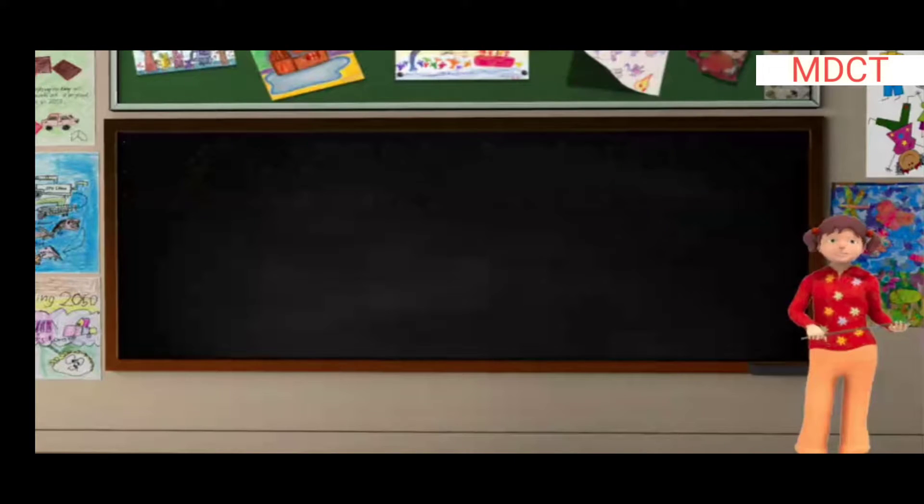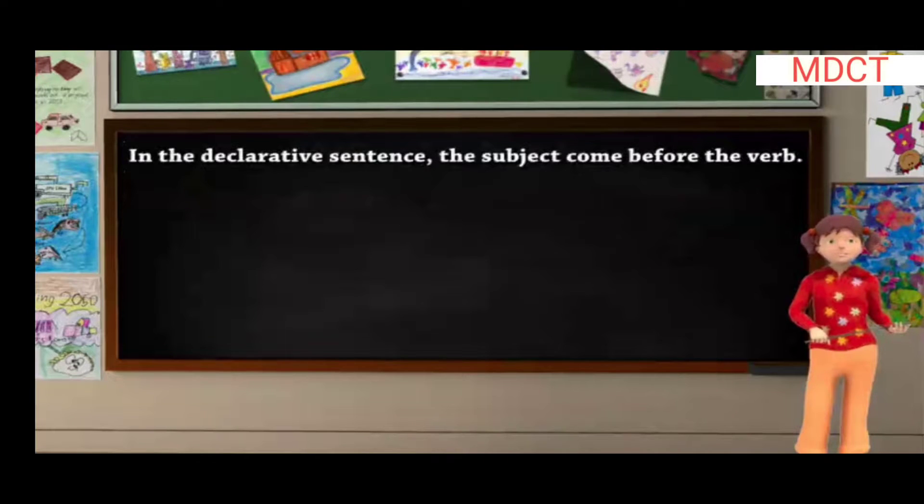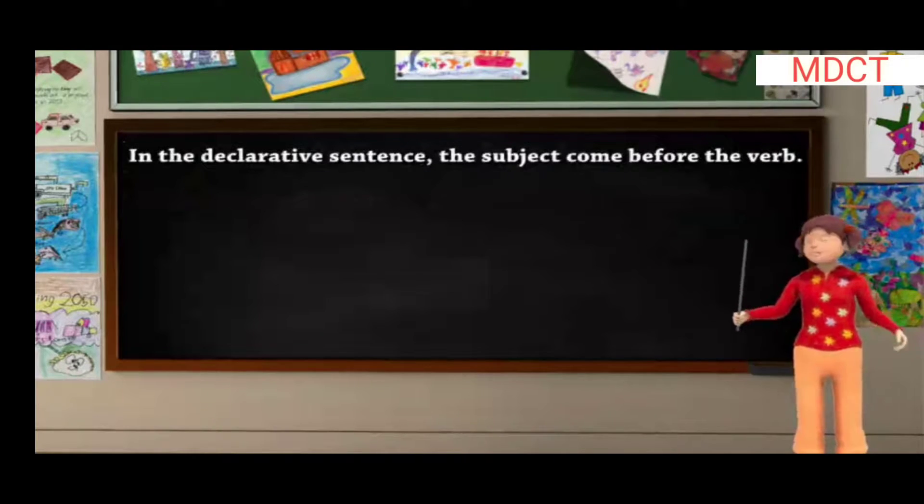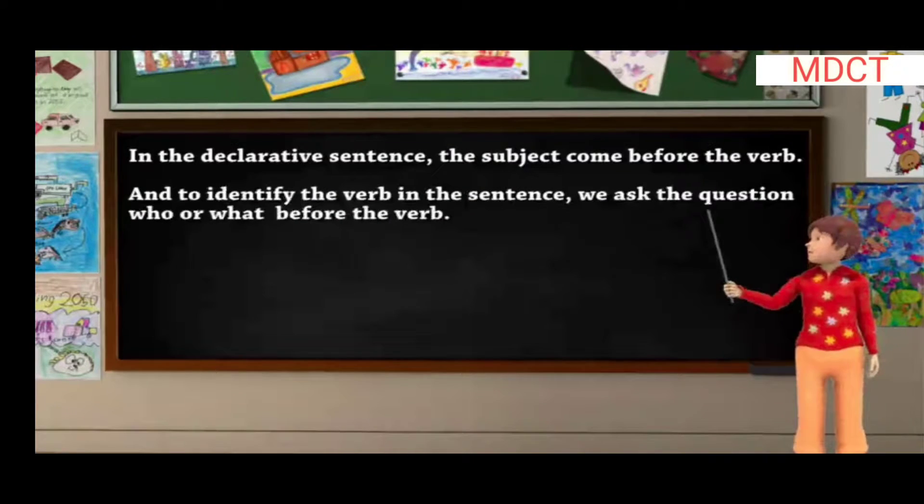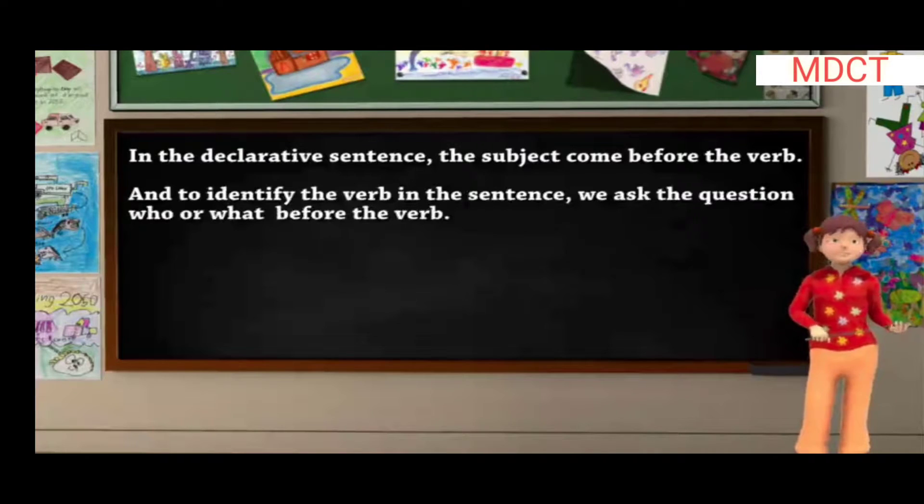Let us now further learn about them. Students, in the declarative sentence, the subject comes before the verb. And to identify the verb in the sentence, we ask the question who or what before the verb.